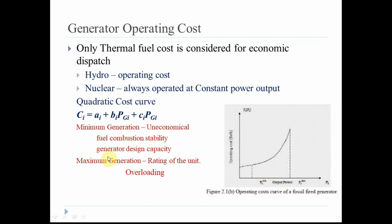Operating below the minimum value is considered uneconomical. Two factors that determine this minimum generation value are fuel combustion stability and generator design capacity, both dependent on the unit design. The maximum generation limit is dependent on the rating of the unit — for example, a 2 MW unit can generate at most 2 MW; anything greater is considered overloading. Every generating unit must be operated within the limits of P-minimum and P-maximum.